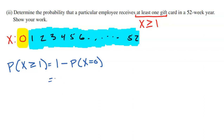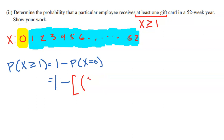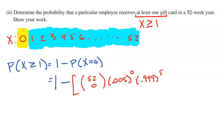What is the probability of winning zero gift cards? Using the binomial formula: 52 choose 0, times 0.005 raised to the zero, times 0.995 raised to the 52. There's only one way to never win — lose all 52 weeks. The probability of success is 0.005 raised to zero (which equals 1), and then 52 straight failures at 0.995 each week.